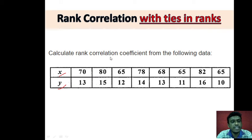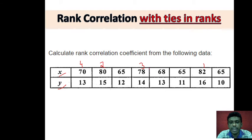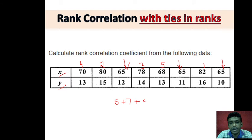Today's problem has X and Y values given. If we try to give ranks, the first through fifth ranks go to individual persons. For sixth, seventh, and eighth positions, there is a tie — three values are equal. So the average rank we will give is 6 plus 7 plus 8 divided by 3, which equals 7. So the rank given to all three tied values is 7.